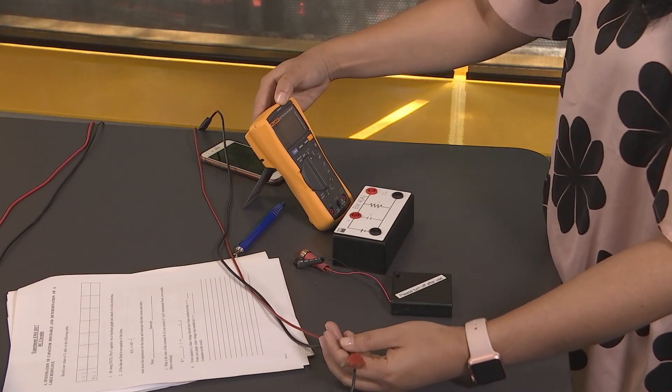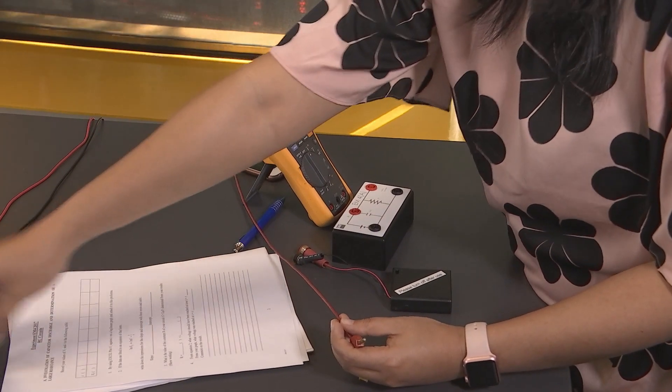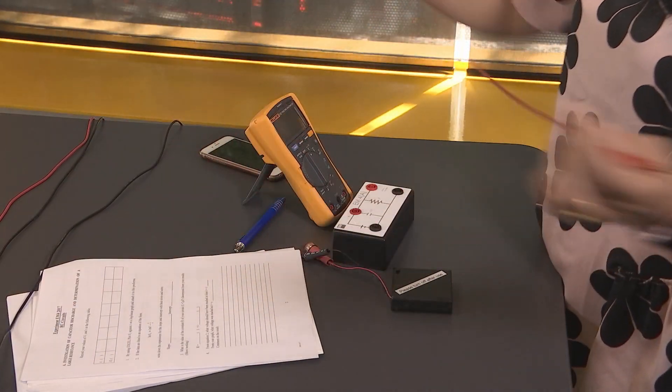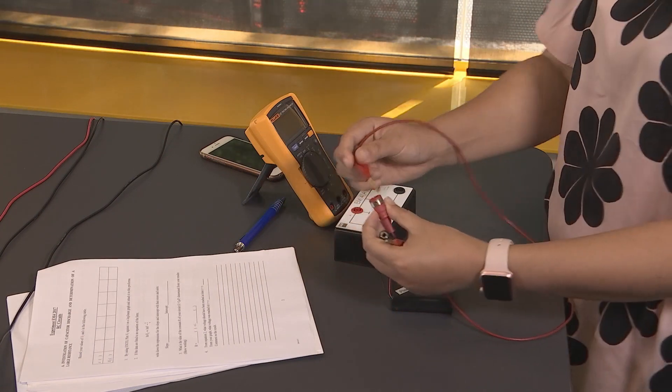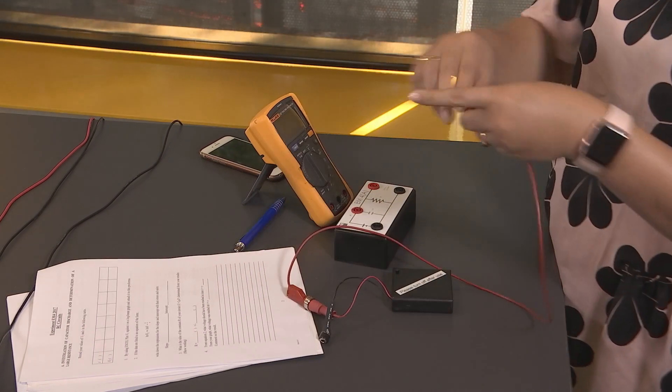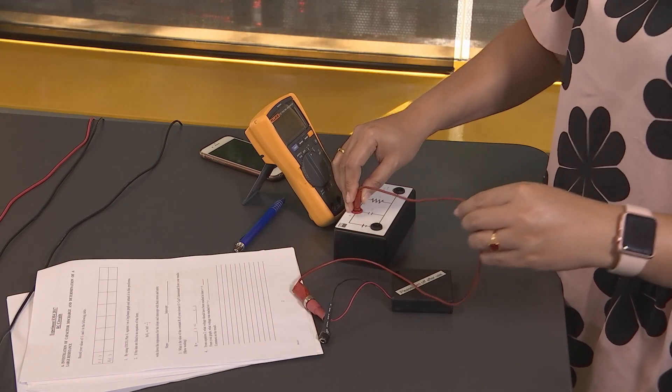Now I am going to start connecting my circuit. First I am going to use this red cable to connect the positive of the power supply to the positive side of this capacitor.